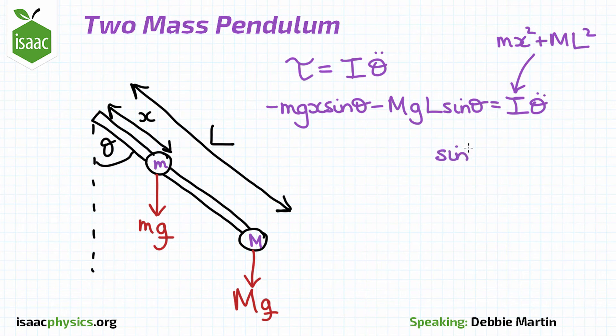Using our small angle approximation sin theta is approximately equal to theta. We can rewrite this in the form theta double dot equals minus omega squared theta.